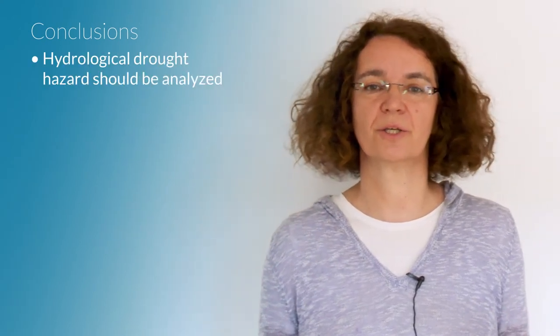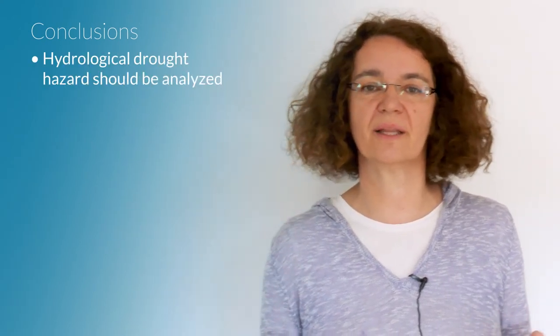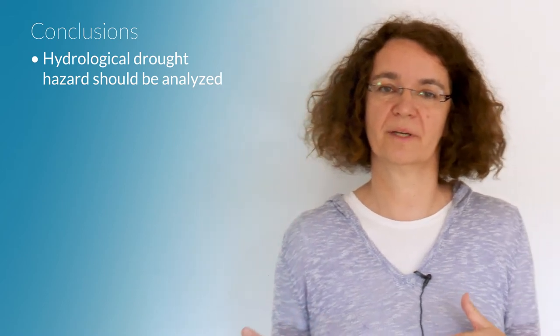I will now finalize my lecture with two conclusions. The first conclusion is that hydrological drought hazards should be analyzed because humans and other biota depend more directly on water in streams, groundwater and soil than on precipitation.